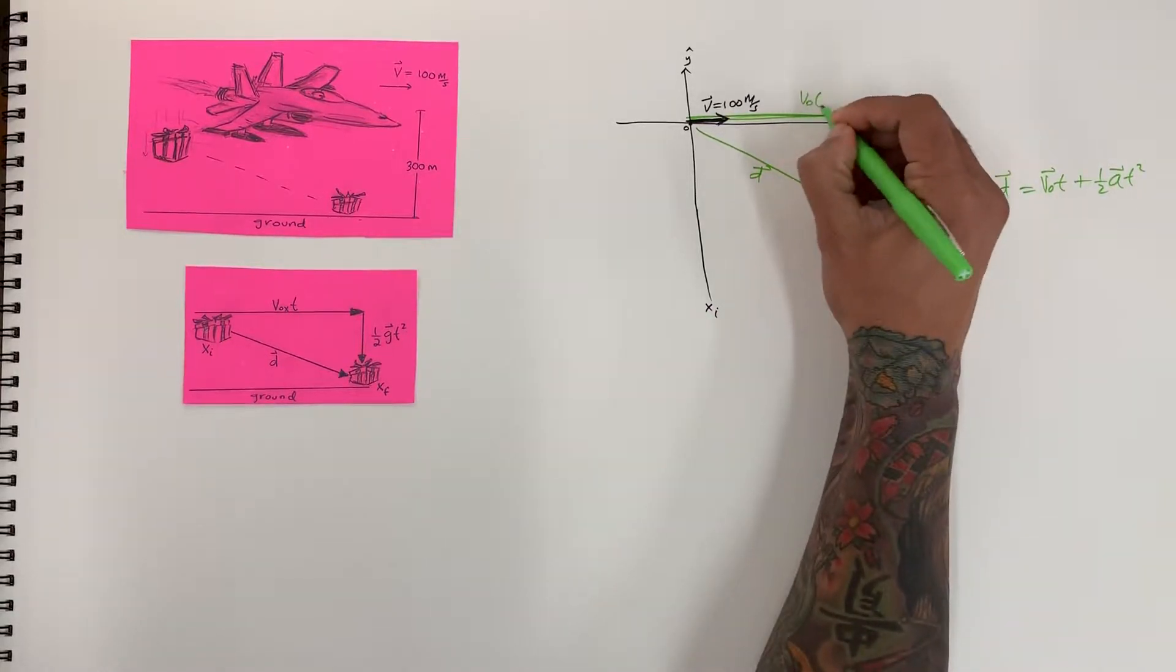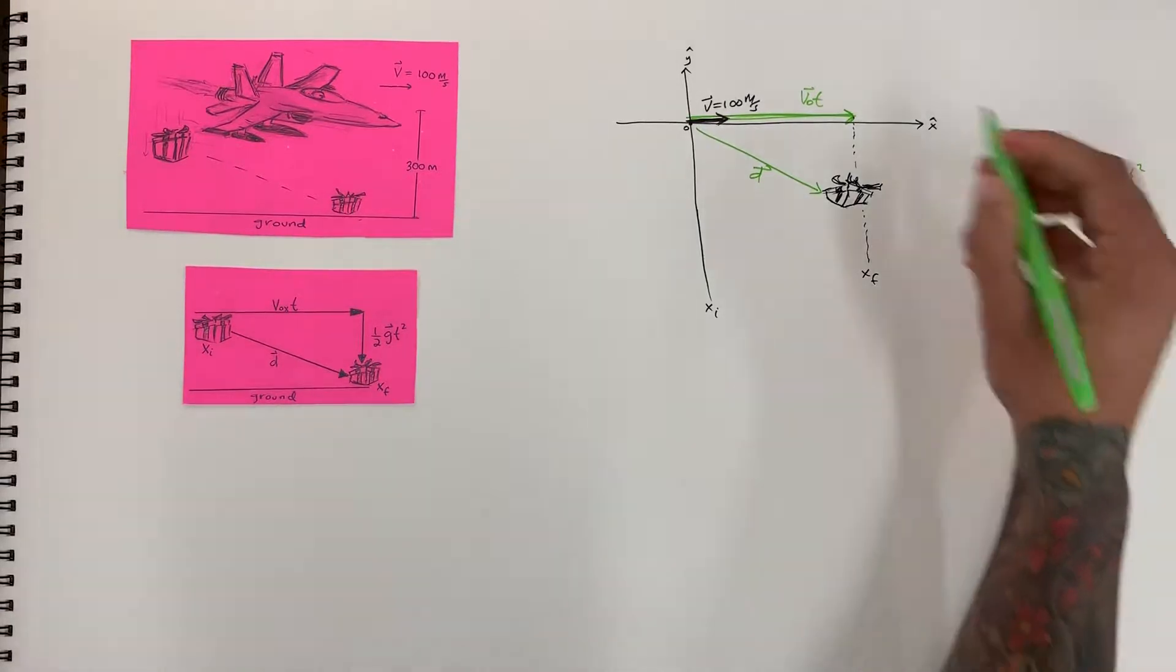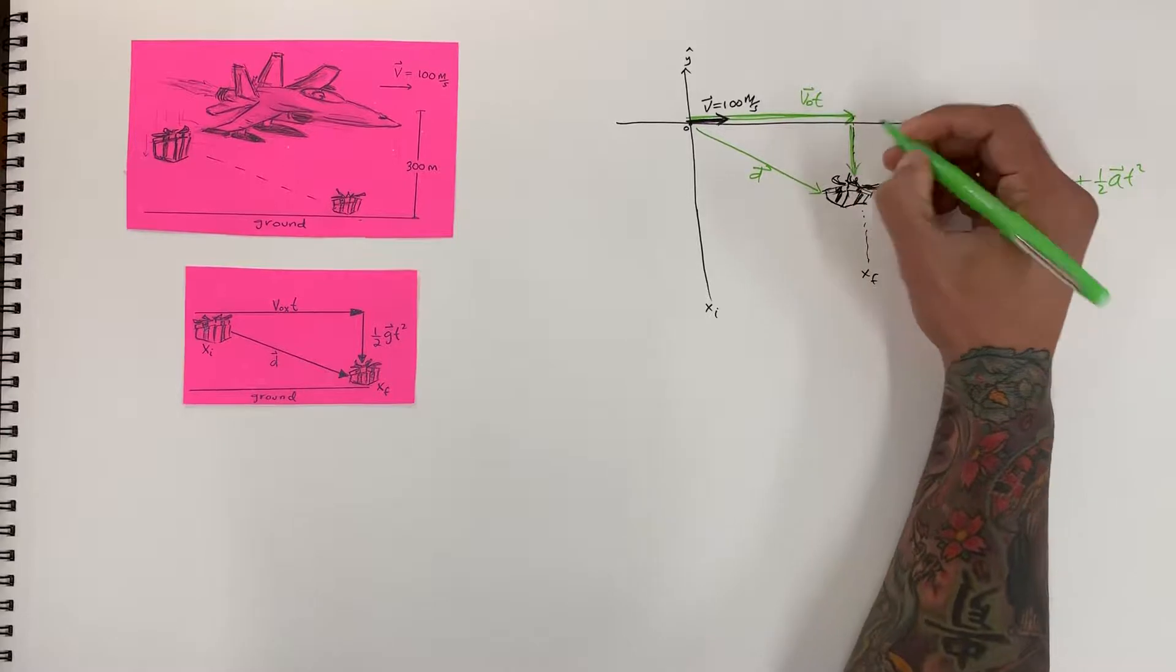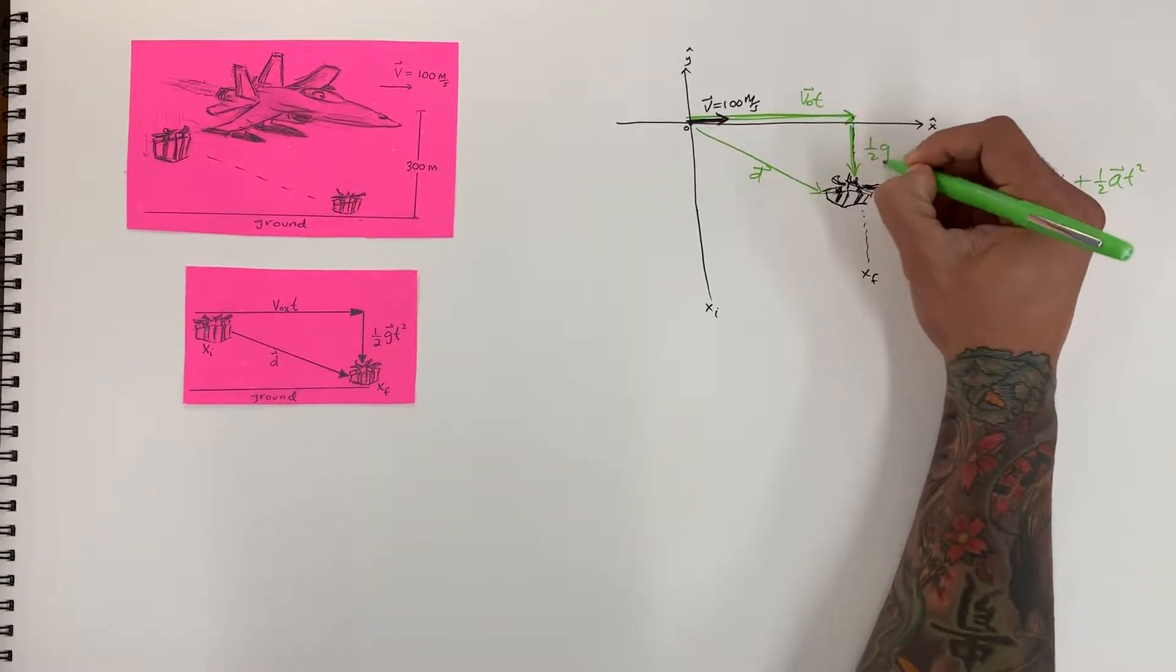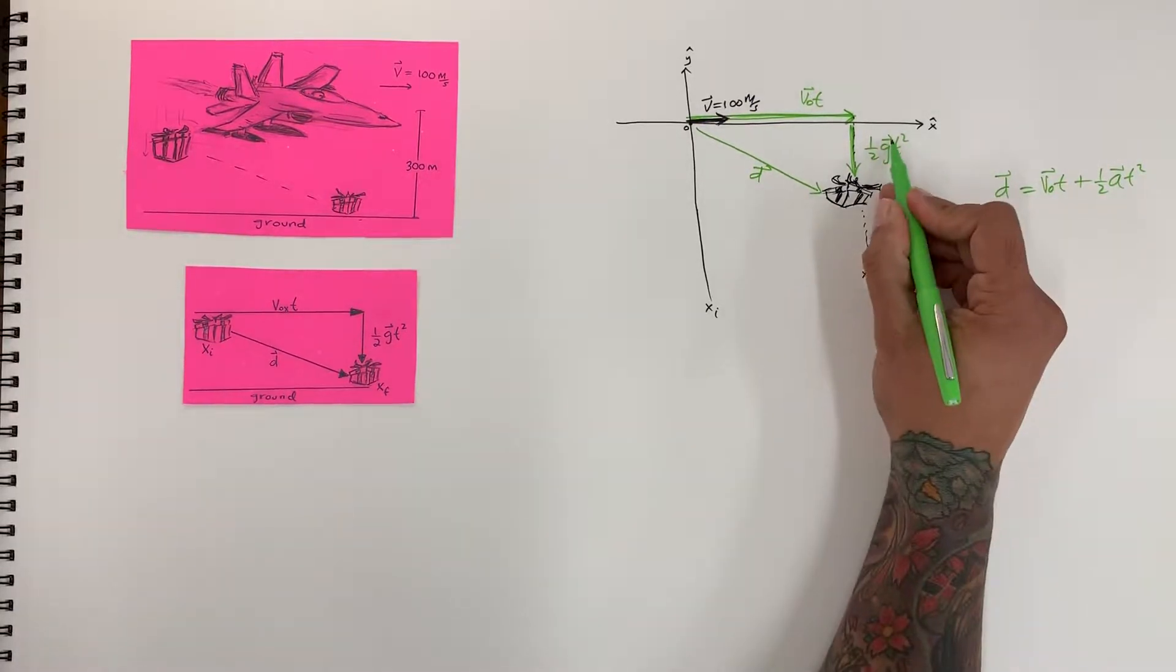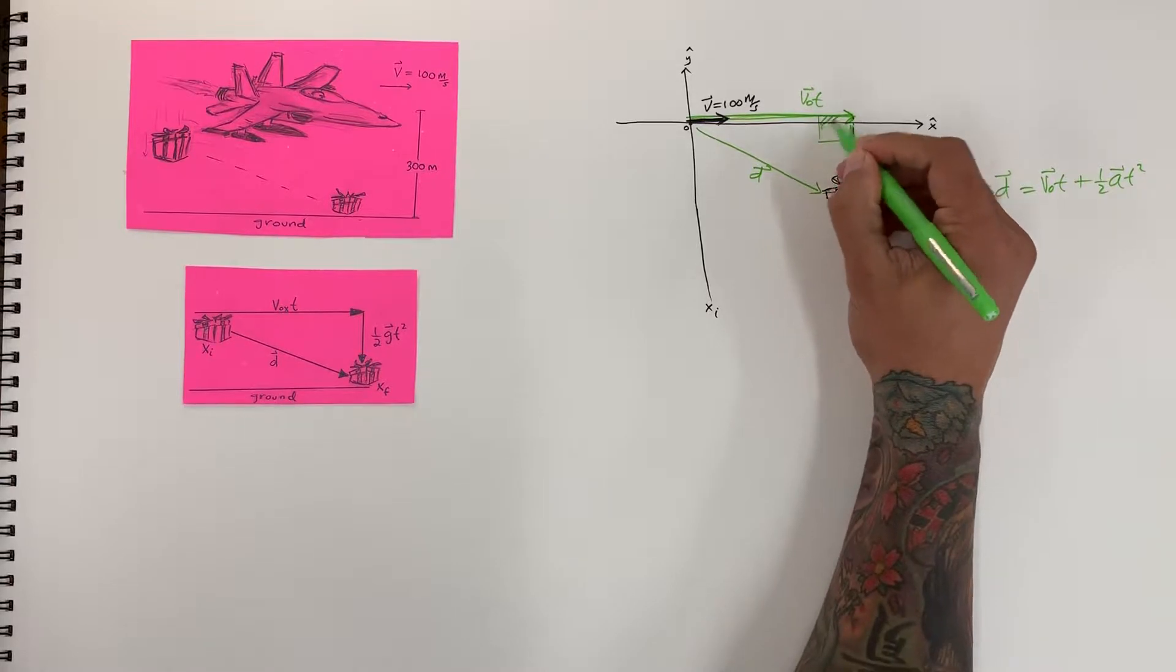Okay, so we got v-initial t, and now our last vector in the back, we got always going downward gravity. So one-half g t-squared. It's an acceleration in the y. So with this, we have a right triangle right here.